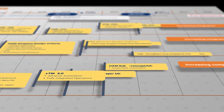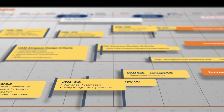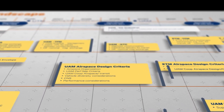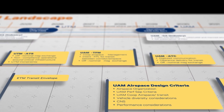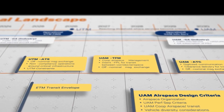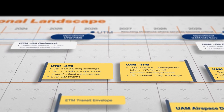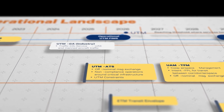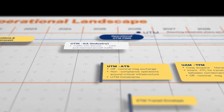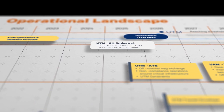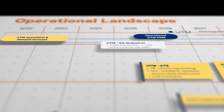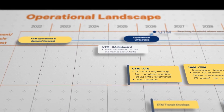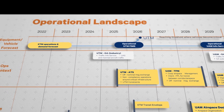Diverse operations are conducted in a highly automated, information-centric environment. Information is shared using common standards and messaging protocols to ensure interoperability. Traffic management services are self-provisioned by operators or provided by third-party service suppliers, while the FAA has authority over aircraft operations in airspace.